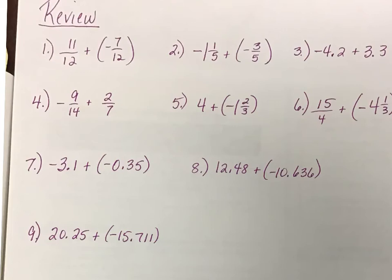Number one, what are we really doing to these two? We're really going to subtract. Do they have a common denominator? Yes. Which one's bigger without the signs? The 11. So we're going to take 11 twelfths minus 7 twelfths. That gives me 4 twelfths. I'm going to take the sign of the 11, which is positive. Divide both of these by 4, and you get the final answer of one-third.